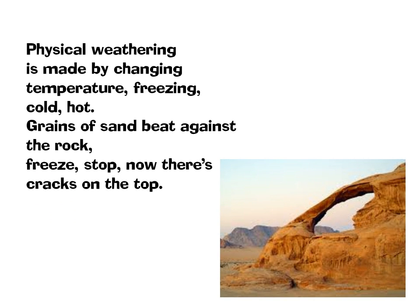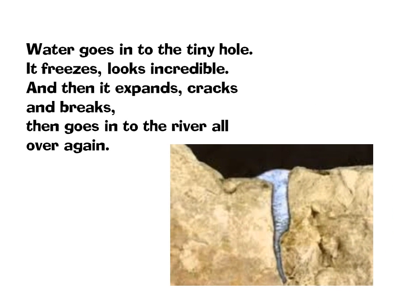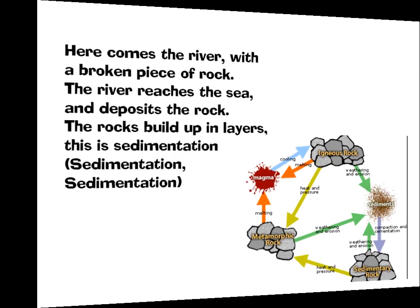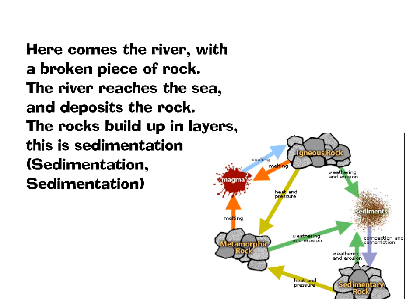Physical weathering is made by changing temperature — freezing cold, hot. Grains of sand beat against the rock. Freeze, stop — now there's cracks from the top. Water goes into the tiny hole, it freezes, and then it expands, cracks and breaks. Then it goes into the river all over again.